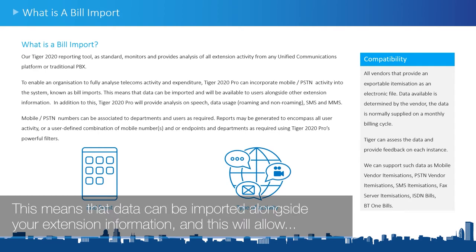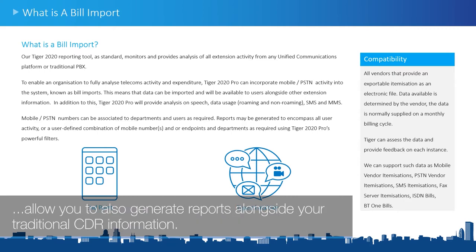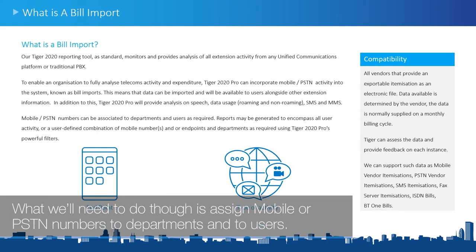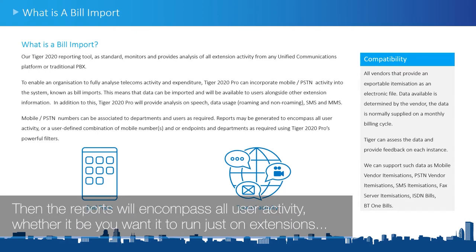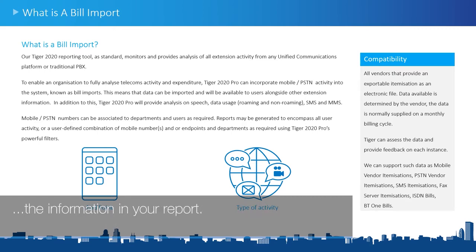This means that data can be imported alongside your extension information, and this will allow Tiger 2020 to provide analysis on speech, data usage, roaming, SMS and MMS. This will then allow you to also generate reports alongside your traditional CDR information. What we'll need to do is assign mobile or PSTN numbers to departments and to users. Then the reports will encompass all user activity whether it be extensions, mobile billing ports, or both, using Tiger 2020 Pro's powerful filtering.